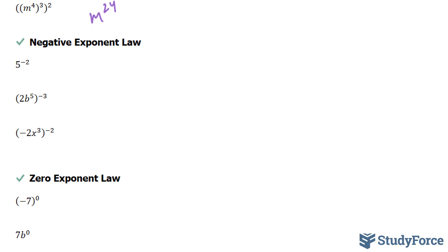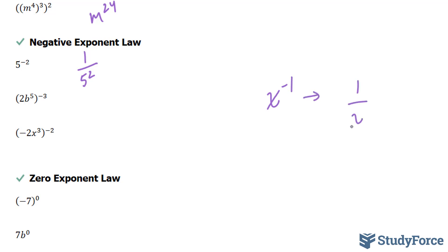Let's move on to the negative exponent law. We have 5 to the power of negative 2. Another way to represent this is 1 over 5 to the power of positive 2. Essentially, you take the reciprocal of the base and flip the sign of the exponent. For example, x to the power of negative 1 becomes 1 over x to the power of 1, which is simply 1 over x.